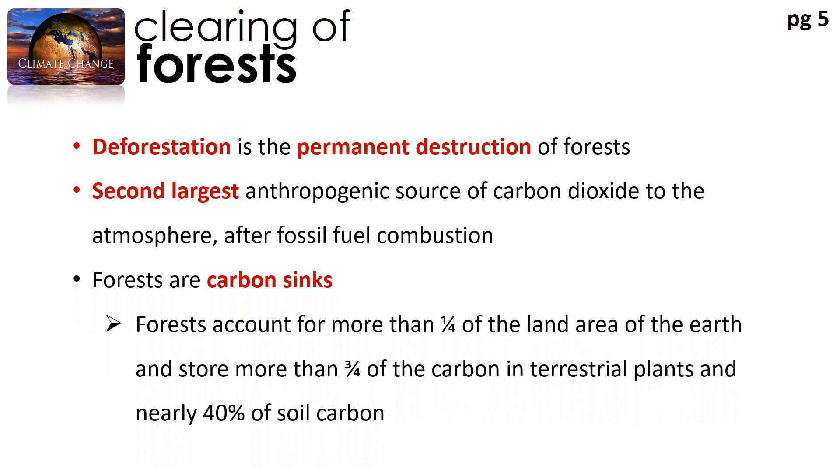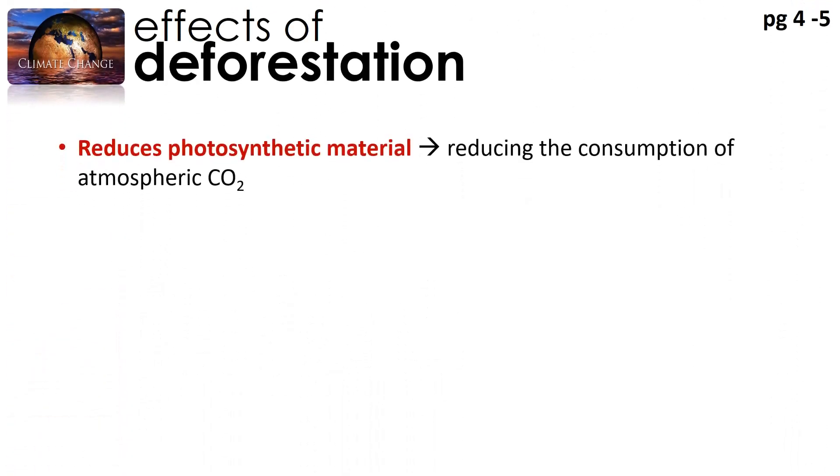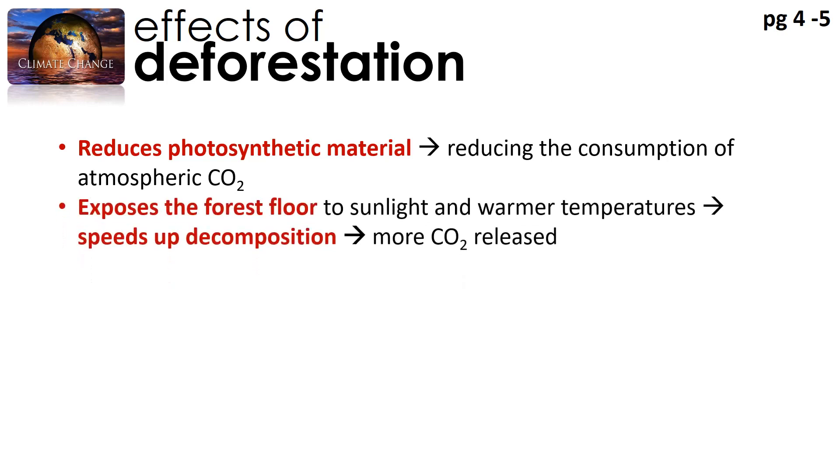What are the effects of deforestation? Now forests are important carbon sinks. That means they store a lot of carbon for us. Forests account for more than one quarter of the land area of earth, and they store more than three quarters of carbon in terrestrial plants and nearly 40% of soil carbon. So when we remove forests, when we remove plants, we are actually reducing photosynthetic material. We are reducing the consumption of atmospheric carbon dioxide because there are no plants to carry out photosynthesis. On top of that, the removal of tree canopy exposes the forest floor to sunlight and warmer temperatures. This will favor accelerated rates of decomposition and this will accelerate the release of carbon dioxide. Furthermore, the bulk emissions of carbon dioxide comes from the burning of these trees. Because when the trees are burnt and they die, they will be releasing their stored carbon into the atmosphere.